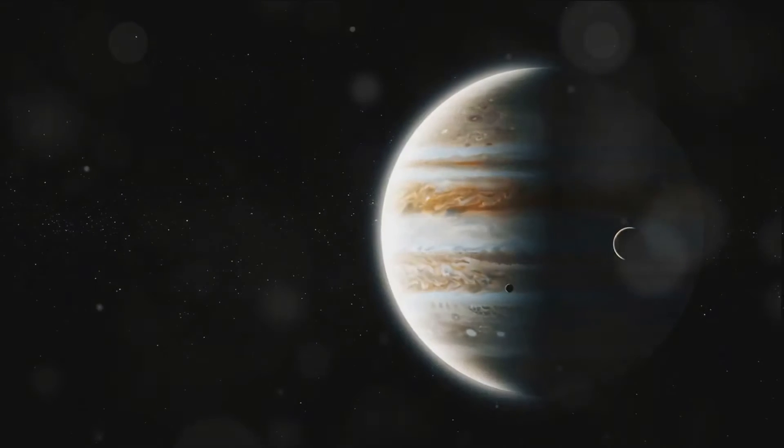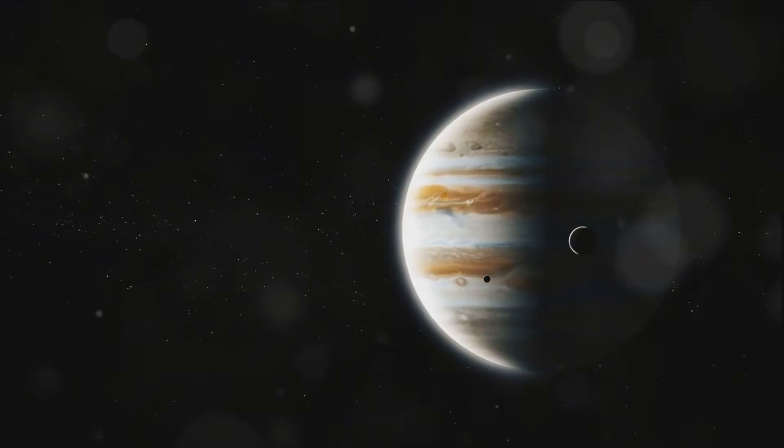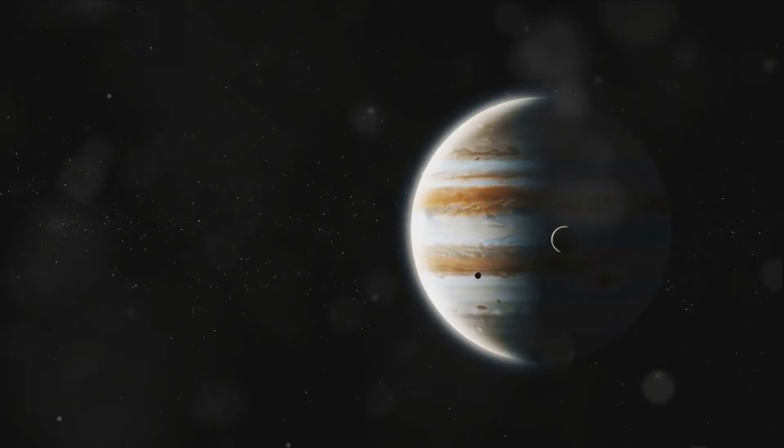This intriguing planet, nestled nearly 1,150 light-years from Earth, orbits its star every 3.4 days. With about half the mass of Jupiter, WASP-96b is a remarkable world that was unveiled to us back in 2014.